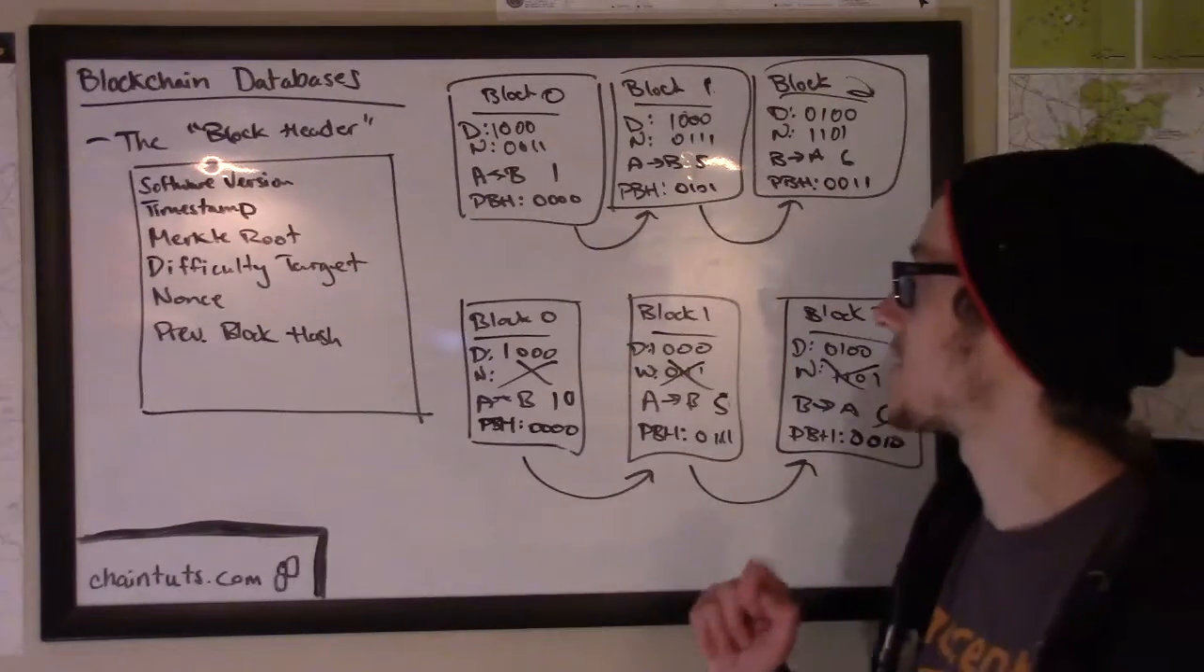So in this hypothetical example, Bob tries to modify the blockchain and introduce a new set of blocks to the network, where in the first transaction, Alice actually gives him 10 bitcoin. And down the line, Bob says, oh yeah, she gave me the other five. And at the end, Bob pays Alice back the six that she thinks she gave Bob.